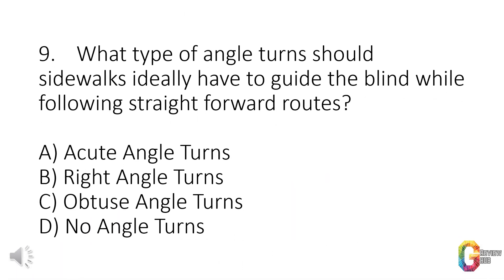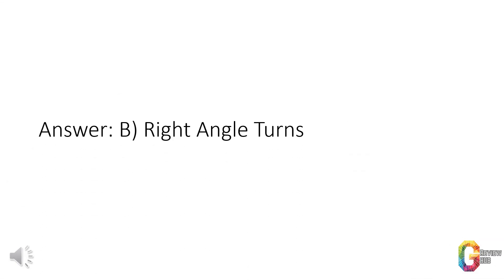Question 9. What type of angle turns should sidewalks ideally have to guide the blind while following straight-forward routes? a. Acute angle turns. b. Right angle turns. c. Obtuse angle turns. d. No angle turns. Answer: b. Right angle turns.